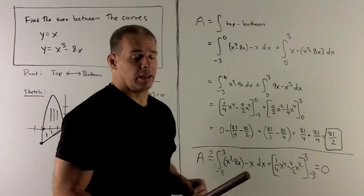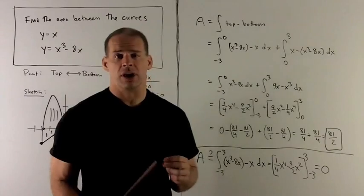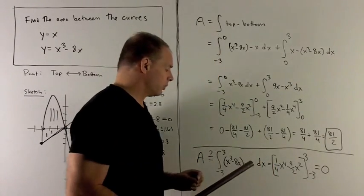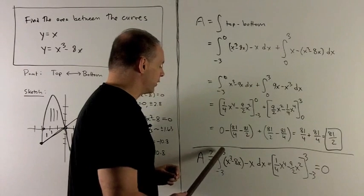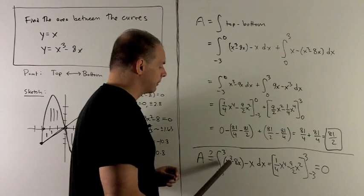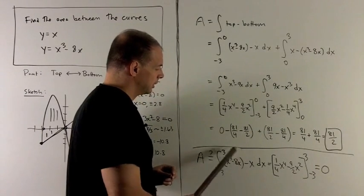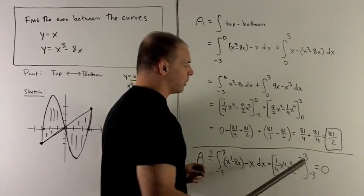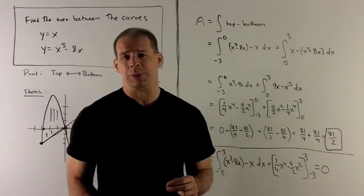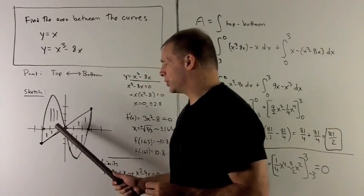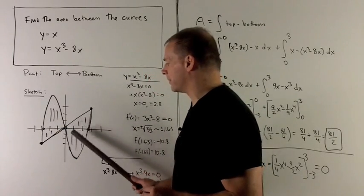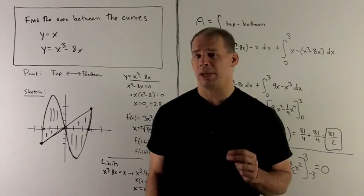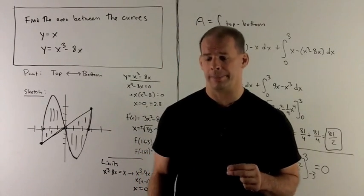Note, if we weren't careful with this, if, for instance, we just assumed the cubic was on top the whole time, we run into problems. So if I integrate from minus 3 to 3 of my cubic minus the bottom, we just use our top minus bottom formula where we're going to wind up getting 0. And we know that's garbage because the area between these two curves is definitely a positive number. There's something happening between these two curves. So make sure you sketch before you integrate.